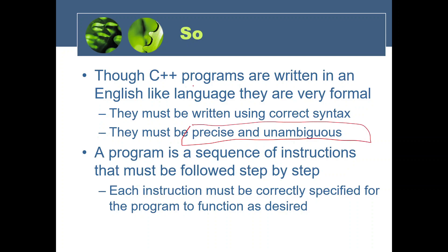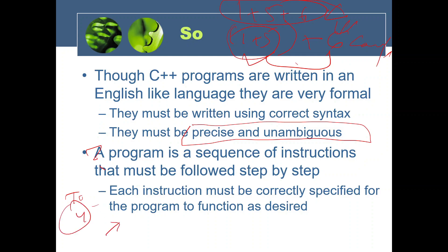What does ambiguous mean? For example, one plus five plus six is not ambiguous because we know who adds first. But if we say one five plus six, how do we understand who adds first? That is ambiguous. Your code should not be ambiguous — the compiler takes care of this but sometimes gives an error. A program is a sequence of instructions, like telling someone: go to the market, buy bananas, come back, put them in the fridge. The programmer executes code in sequence.